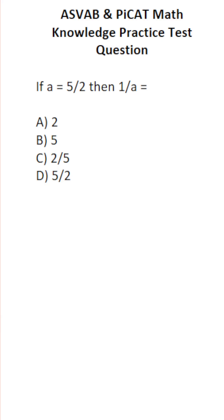This math knowledge practice test question for the ASVAB and PICAT says if A equals 5 over 2, then 1 over A equals. So again, A is 5 over 2 according to the problem, and we want to know what 1 over A is.